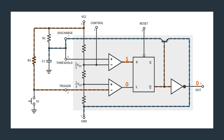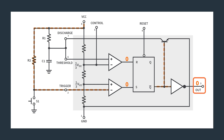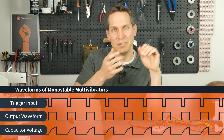Once that capacitor is discharged immediately, everything flips again — R becomes zero, S becomes zero. But since for that brief moment Q-bar was one, once you have S equals zero and R equals zero, Q-bar is just dependent on the previous state, which was one. So now we're back in our stable configuration, and the output drops back down because it is again the inverse of Q-bar.